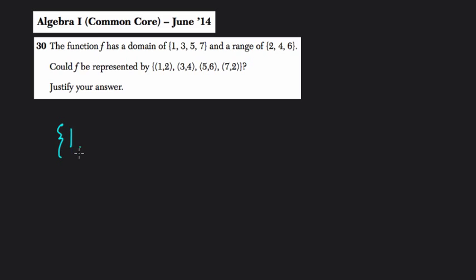It tells us here that the function f has a domain, that's your inputs, your x values, your domain, these numbers: 1, 3, 5, and 7. These are my brackets, so that's our domain, and a range of 2, 4, and 6. Those are our outputs, the range, sometimes referred to as our y values.